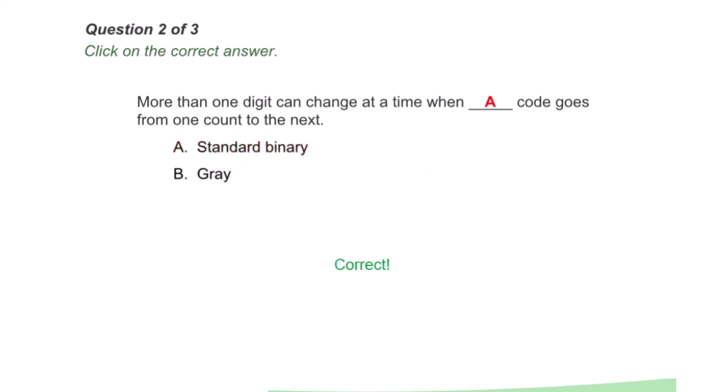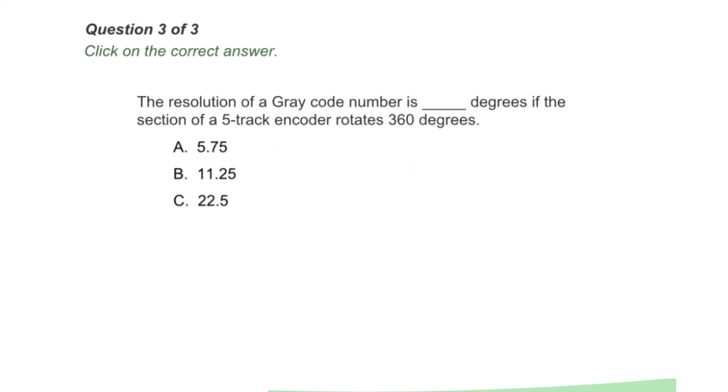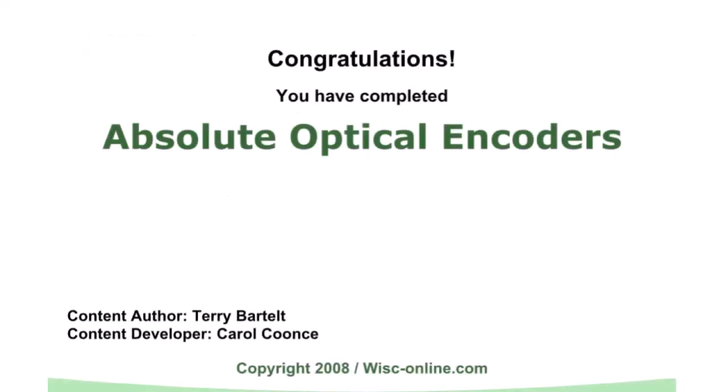A, standard binary. Question three of three: The resolution of a gray code number is how many degrees if the section of a five track encoder rotates 360 degrees? B, 11.25. You have completed absolute optical encoders.